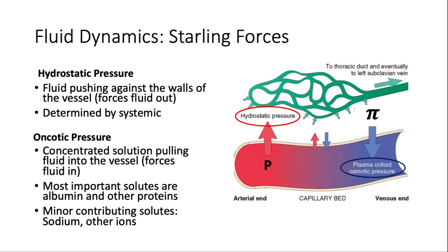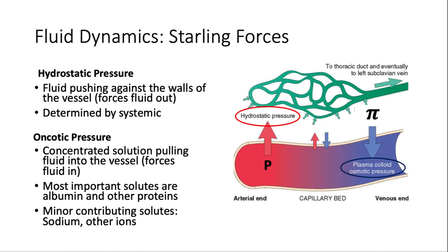Starling forces begin with hydrostatic pressure — the pressure from systemic blood pressure pushing outward against vessel walls, forcing fluid out. To counterbalance this, we have oncotic pressure (also called plasma colloid osmotic pressure), composed mainly of large proteins like albumin, with minor contributions from sodium and other ions. These two forces work in balance to keep adequate fluid inside the vessel. Any excess fluid left in the interstitial space is returned through the lymphatic ducts to the subclavian vein.